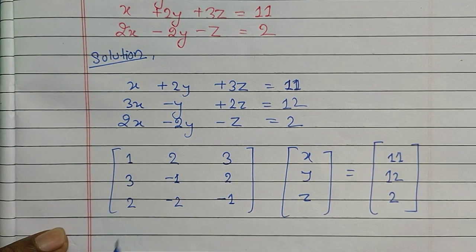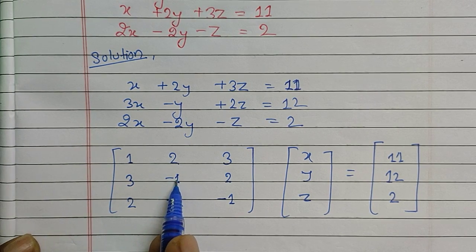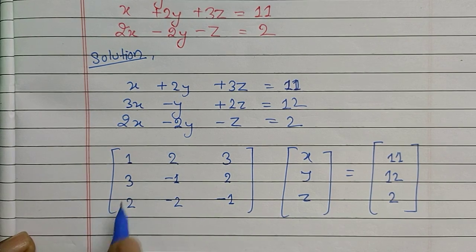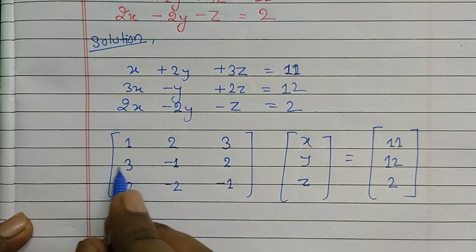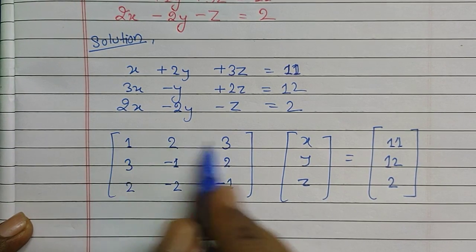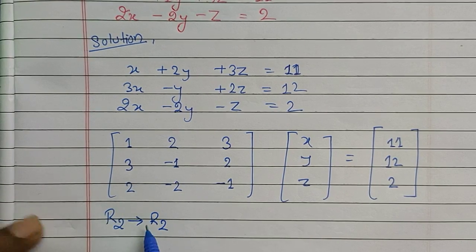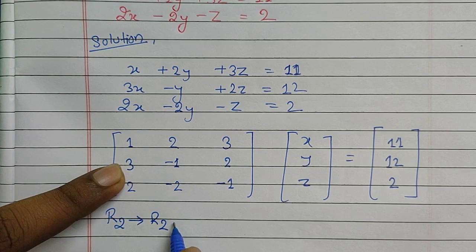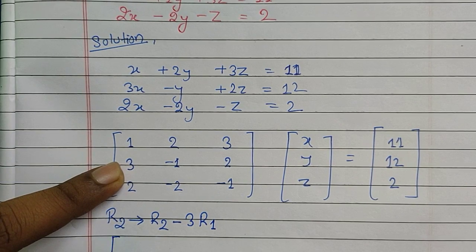Our first operation will be to make the terms below the pivot in the first column equal to zero. We need to eliminate the 3 in R2. To make it zero we subtract 3 times R1 from R2, so the operation is R2 implies R2 minus 3R1, which will make that first entry become 0.